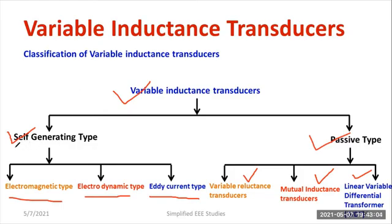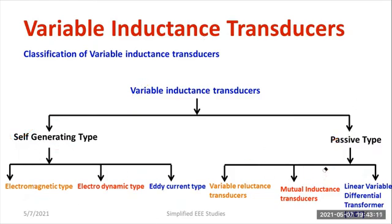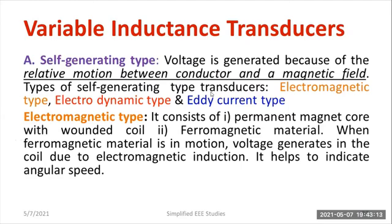I would like to discuss what we mean by self-generating type variable inductance transducer. You have to study what you mean by self-induction. Voltage is generated because of the relative motion between the conductor and the magnetic field. The types of self-generating type transducer are: electromagnetic type, electrodynamic type, and eddy current type.